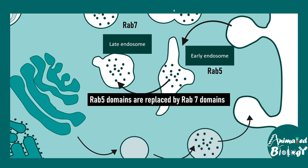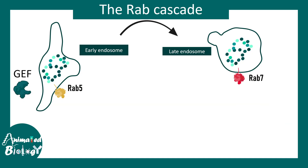Some membrane compartments evolve into other compartments over time. For example, an early endosome eventually becomes a late endosome. In that context, the RAB5 domain gets progressively replaced by RAB7 domains, which helps establish the new identity of that particular vesicular compartment. This process is driven by a RAB cascade.